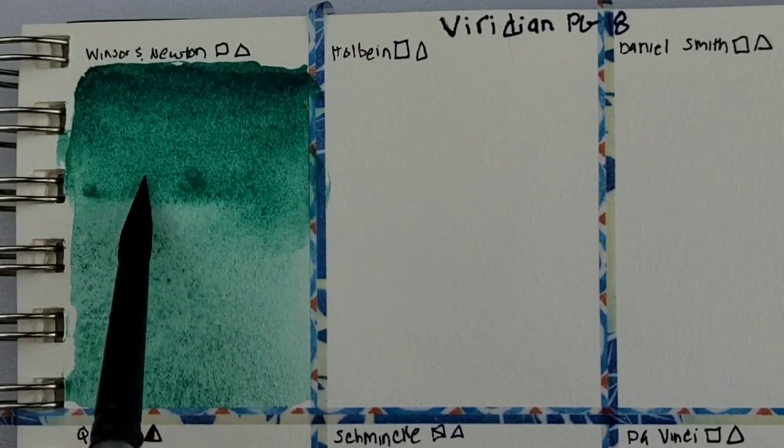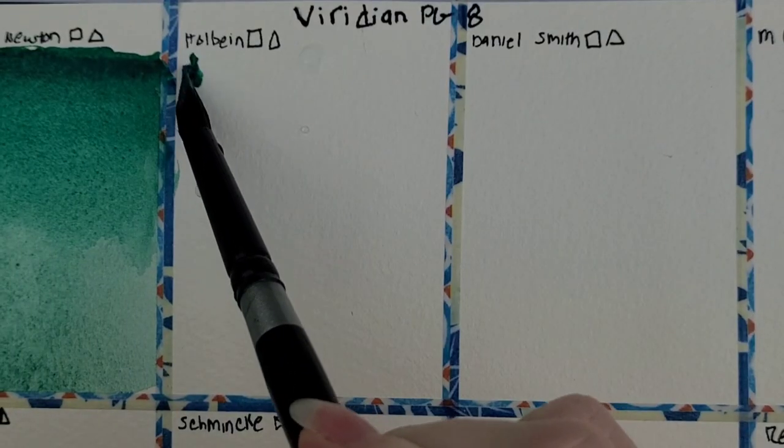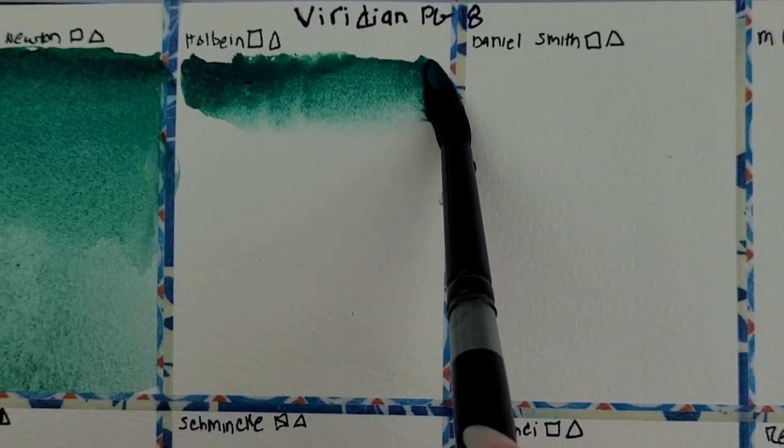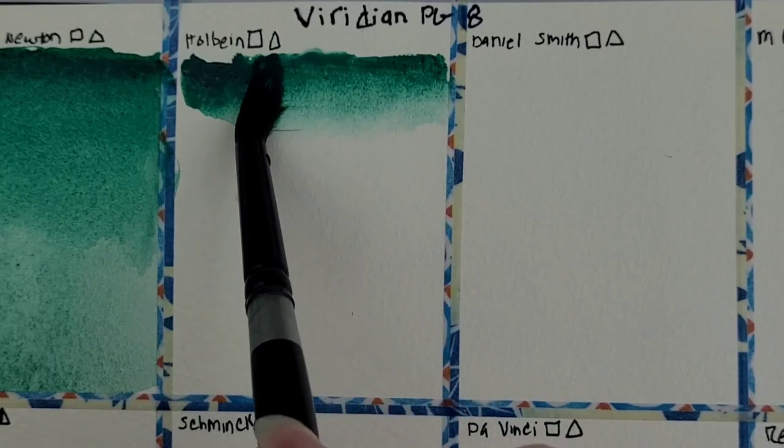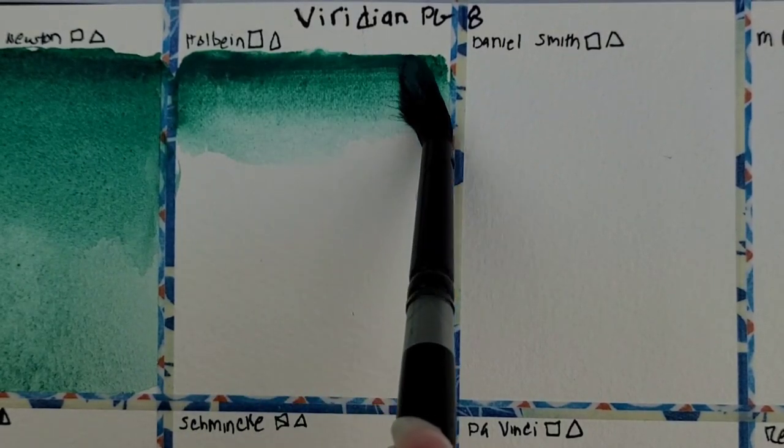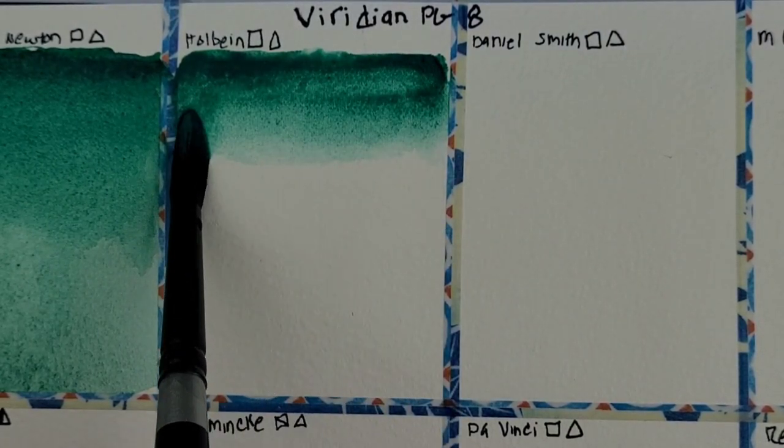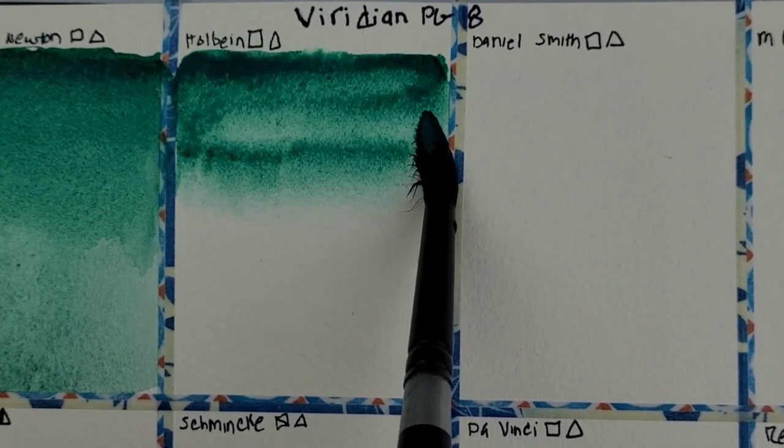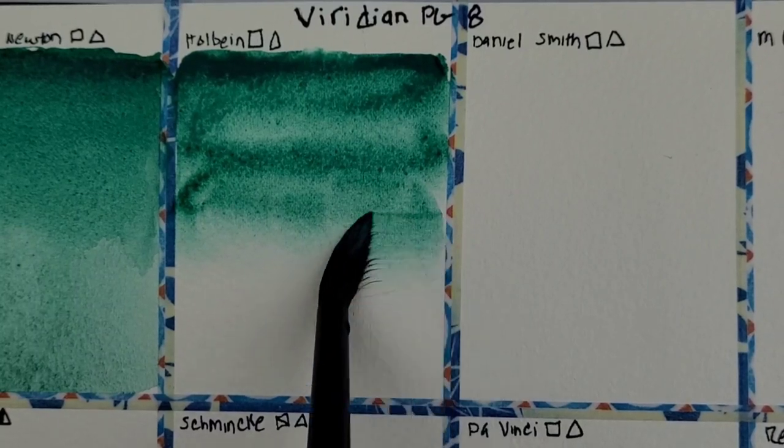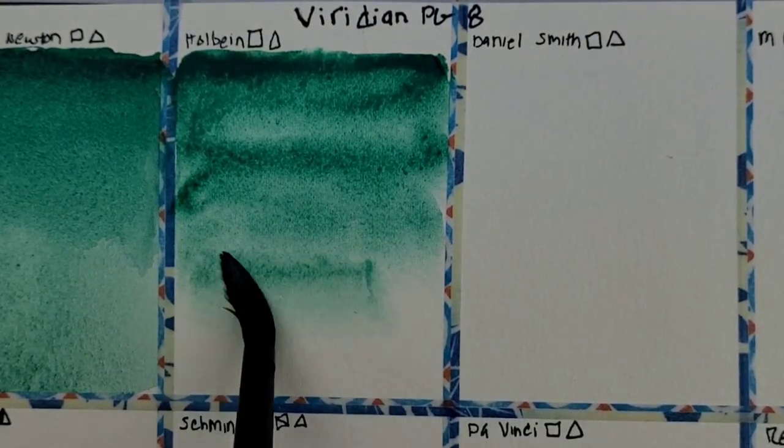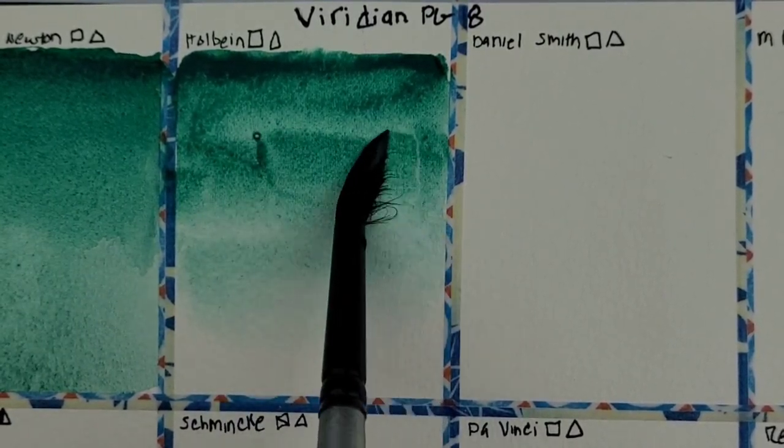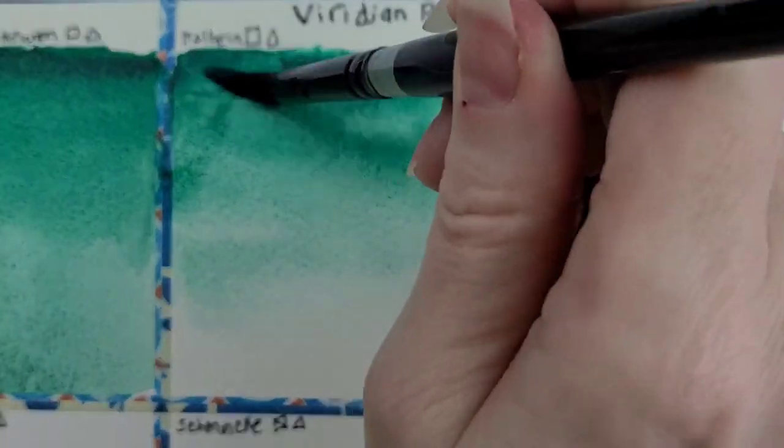So obviously the first one is Winsor & Newton that we're looking at. It undergoes a small drying shift, lightening slightly and losing saturation. In most brands it has a slightly gritty and gummy texture which is useful for glazing and being lifted. It makes light tints and mixes very natural looking greens and moderately intense yellows such as nickel azo yellow. The tinting strength is moderate to low so you want this in a low tinting strength palette.